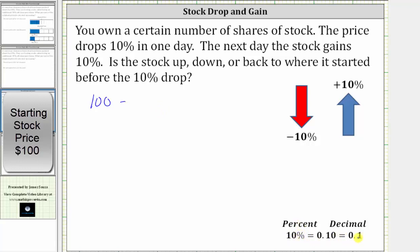10% is equal to 0.1, which gives us minus 0.1 times 100. Simplifying, we have 100 minus 0.1 times 100 is 10. 100 minus 10 is equal to 90. After the 10% drop in price, the stock price is now $90.